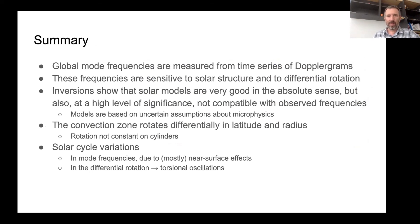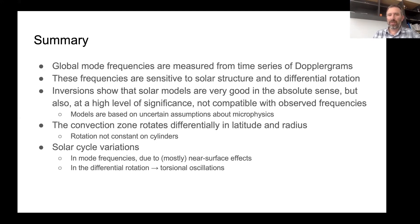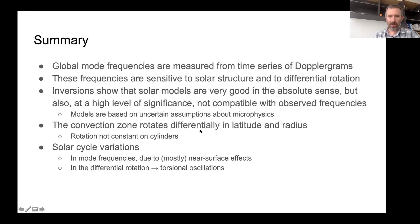By way of summary: global mode frequencies are measured in time series of Dopplergrams. Mode frequencies tell us about solar structure and differential rotation. Inversions of the mode frequencies show that the reference models are really pretty good in an absolute sense, but at high levels of significance they're not compatible with the observations — so there's more to learn. We saw that the convection zone rotates differentially in latitude and radius, and we talked about solar cycle variations.